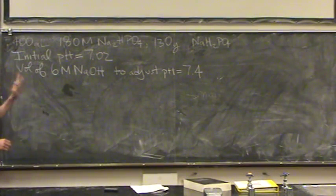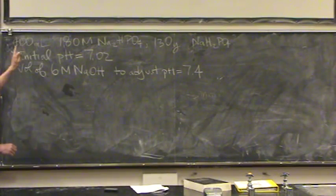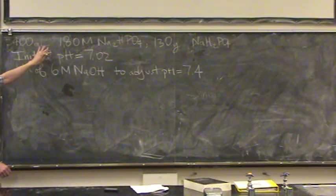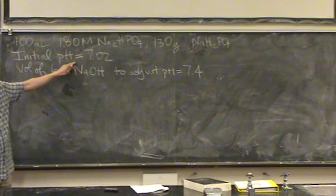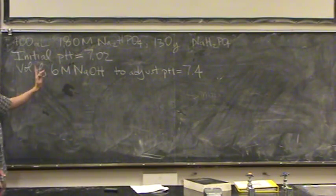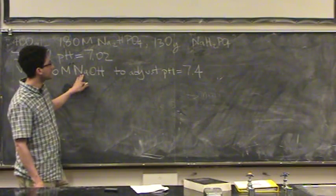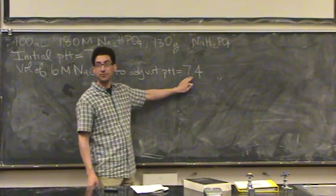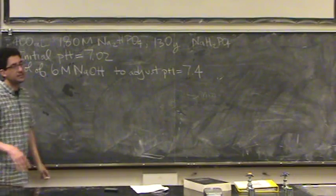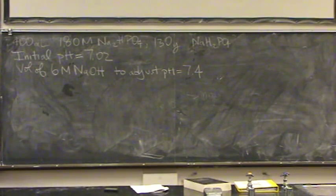Okay, so we've got this phosphate buffer. You can calculate its pH using Henderson-Hasselbalch, you should get an initial pH of 7.02. Now I'm going to add some sodium hydroxide to adjust the pH to 7.4. What happens? This is similar to something we did in class, except it's exactly the reverse of it. Let me show you how this works.